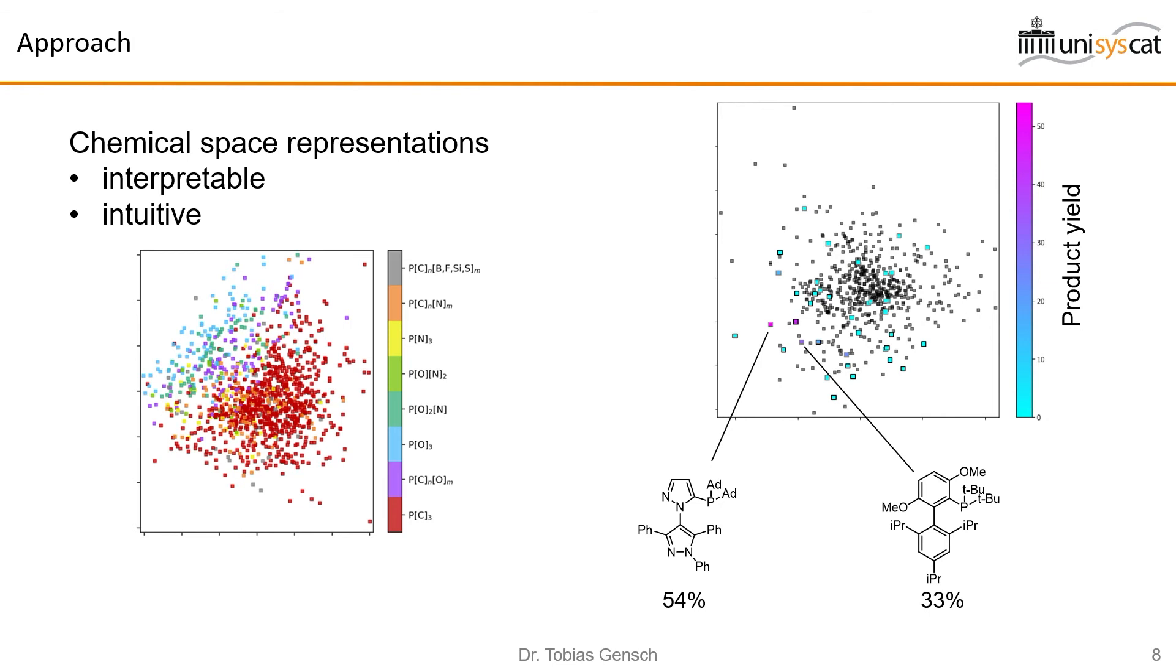We can filter the chemical space representation by criteria such as commercial availability, which is important because then they can just buy the catalyst components. They have run a set of experiments using catalysts that cover this chemical space fairly evenly and I've color coded the yield that they have obtained of the product they needed. At first they only really had two ligands that provided any yield of the product.